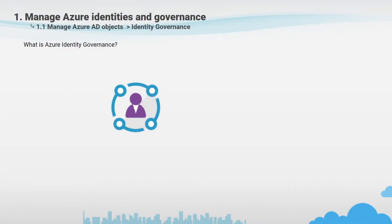Ten years ago, cloud solutions began to grow so fast that right from that moment, it was necessary for many organizations to change the process of governance controls, to monitor user access, and to reinvent the lifecycle in terms of user management. Identity Governance comes with a new lifecycle that allows you to balance your organization's need for security and employee productivity with the right process and feasibility. It provides capabilities to ensure that the right people have the right access to the right resources.